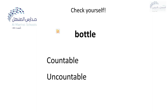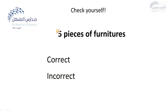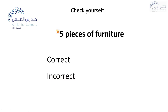What about water? Uncountable. Can I say five furnitures? Is it correct or incorrect? This is incorrect. Can I say five pieces of furnitures — can we add S to the end of furniture? This is also incorrect. What could I say? I could say five pieces of furniture. This is correct.